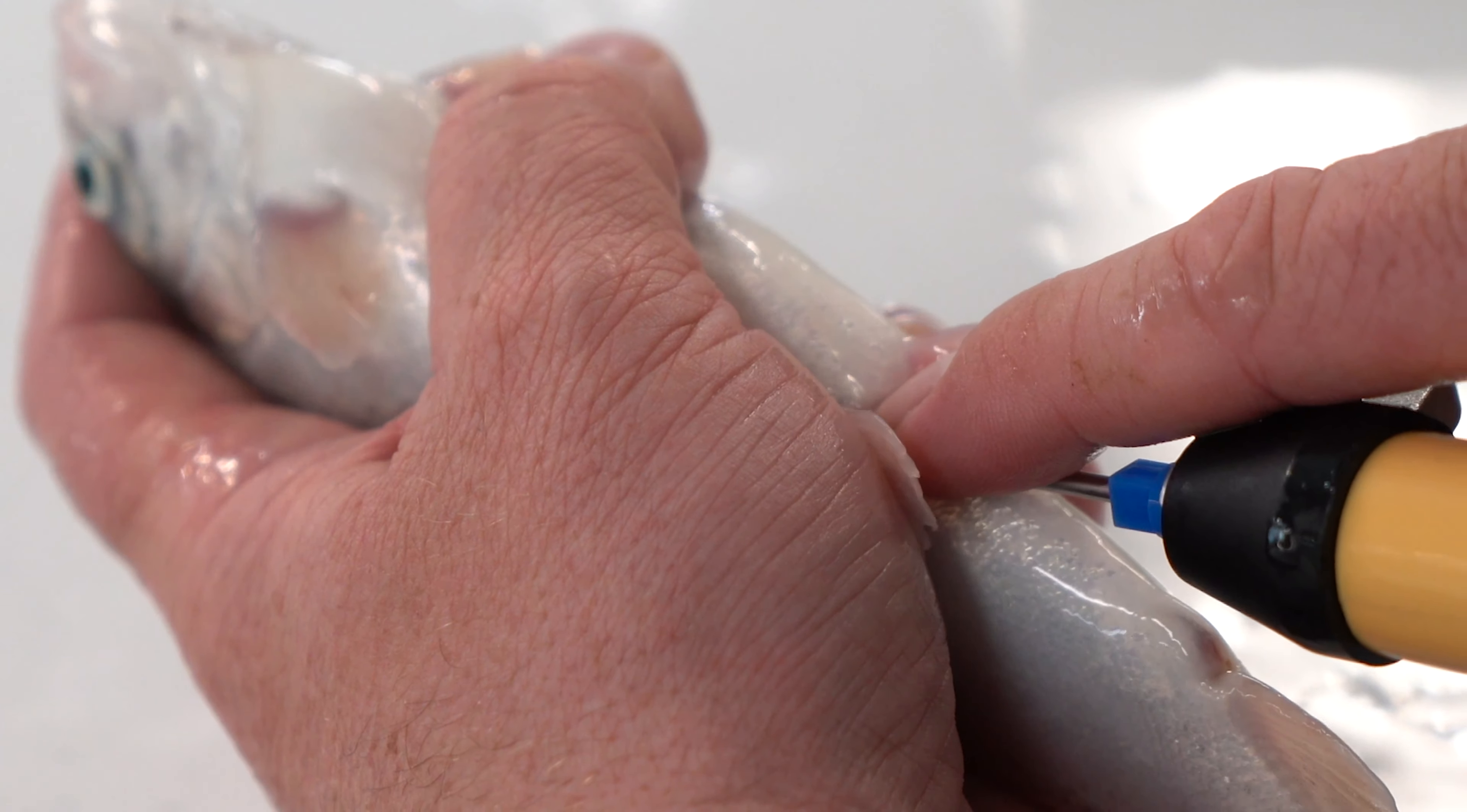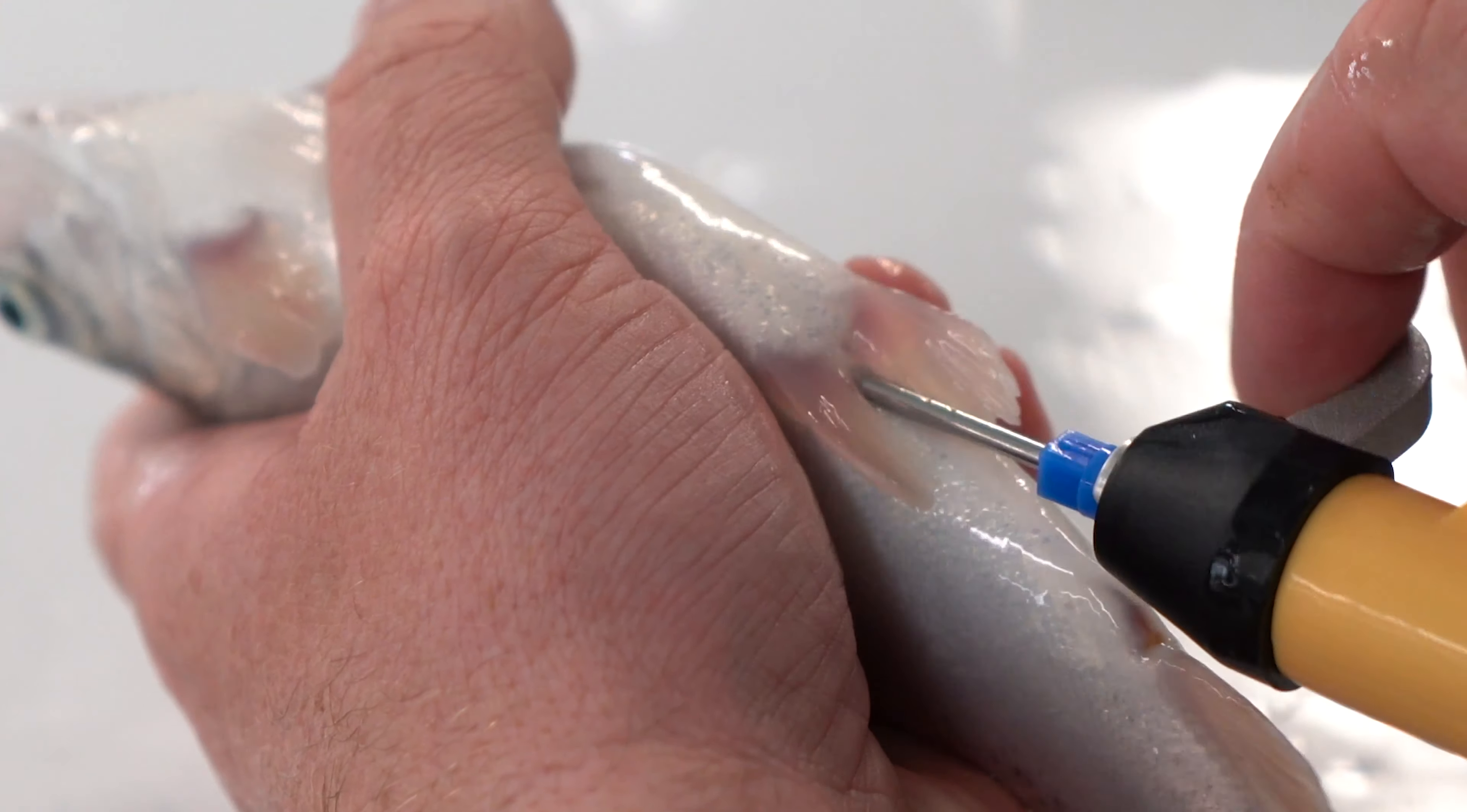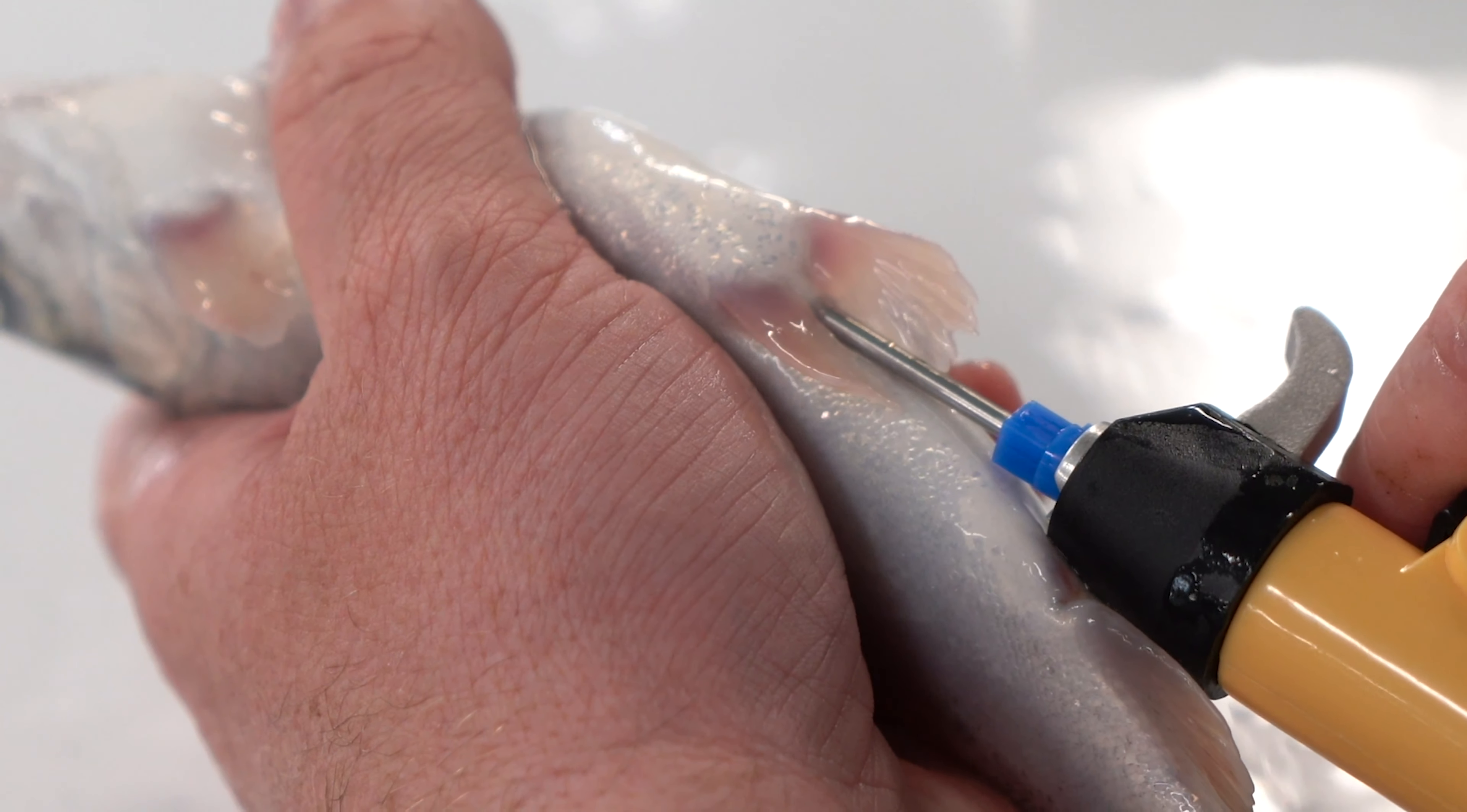While injecting the pit tag, begin removing the needle simultaneously to prevent the tag from being inserted further into the musculature.